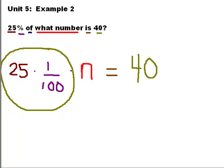So 25 times 1 over 100 is going to be 25 one-hundredths. And then we have times n equals 40.